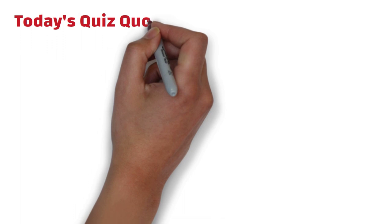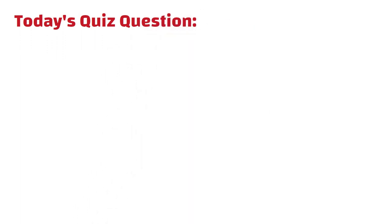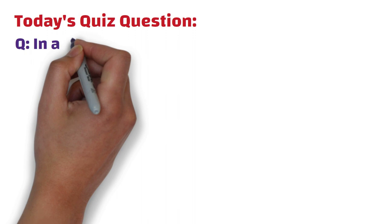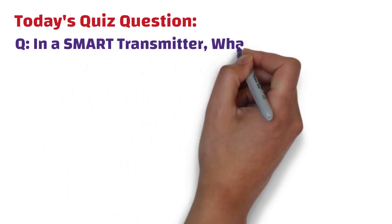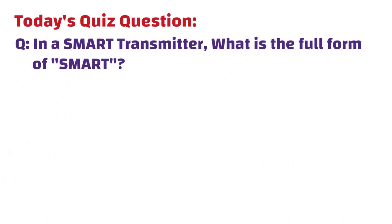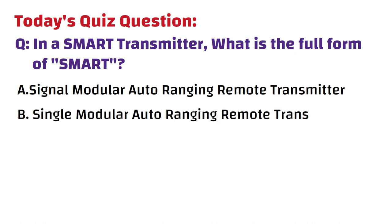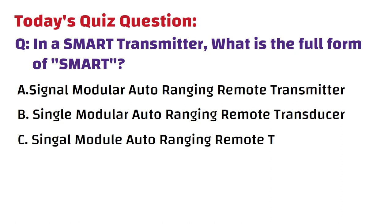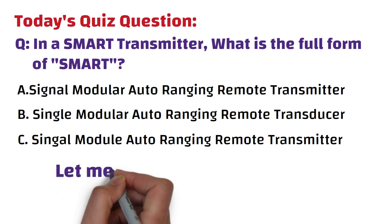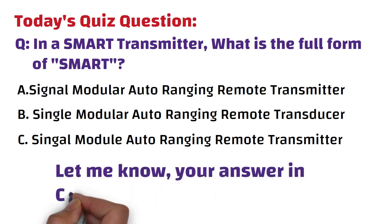First of all, let's start with today's quiz question. Today's quiz question is, in a smart transmitter, what is the full form of smart? Option A is signal modular auto-ranging remote transmitter. Option B is single modular auto-ranging remote transducer. And option C is single module auto-ranging remote transmitter. Please let me know your answer in comment box. I will give the answer of this quiz in next video.